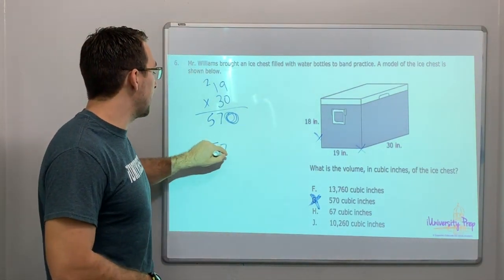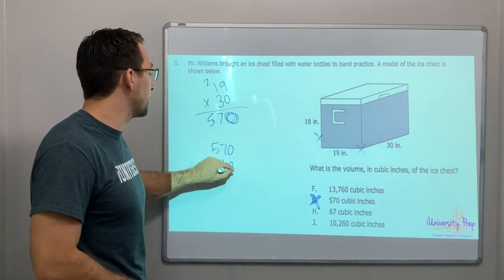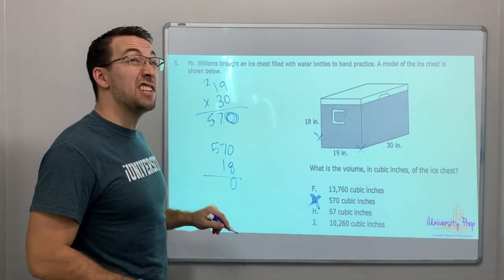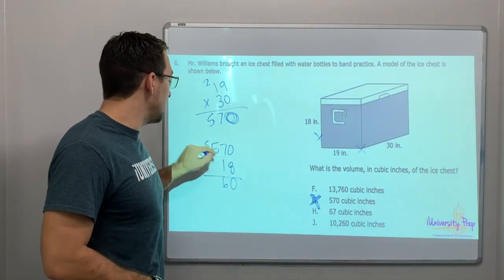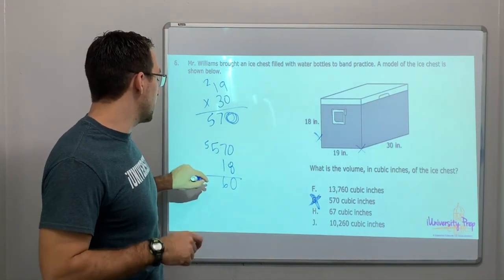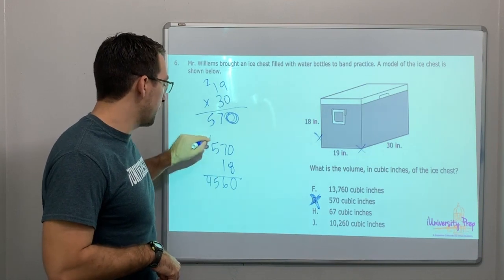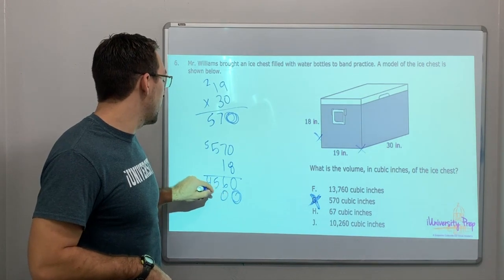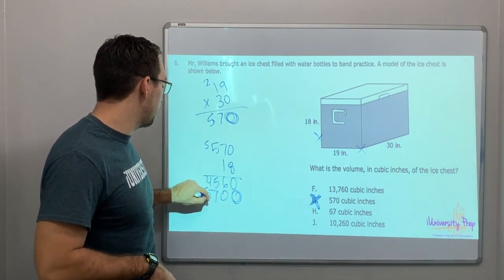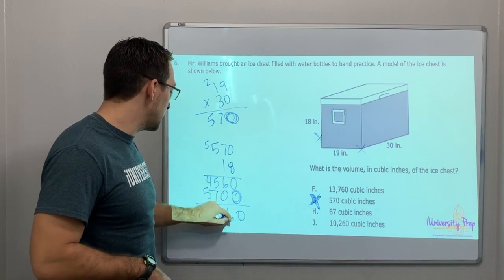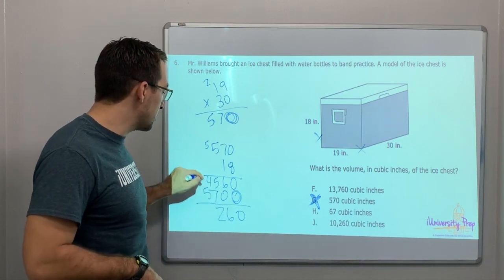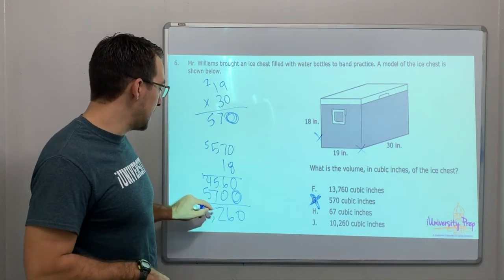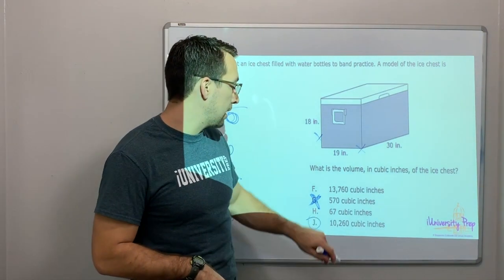So 570 times 18. 8 times 0 is 0, 8 times 7 is 56, 8 times 5 is 40 plus 5 is 45. Then add my 0 and do the 1: 0, 7, 5. Adding columns: 0, 6, 5 plus 7 is 12, carry my 1; 1 plus 4 is 5, plus 5 is 10. That gives us 10,260 cubic inches — that is the volume of the ice chest.